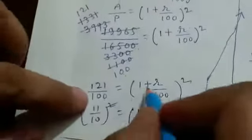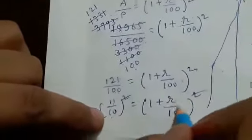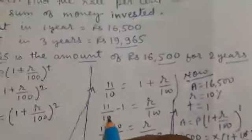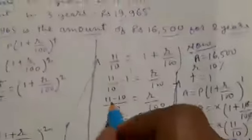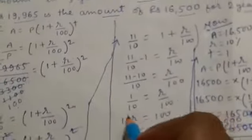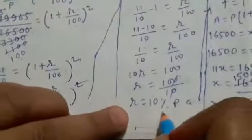Since 121 is the square of 11 and 100 is the square of 10, we have (11/10)^2 = (1 + r/100)^2. Cancelling the powers, 11/10 = 1 + r/100. Transposing 1: r/100 = 11/10 minus 1 = 1/10. By cross multiplication, 10r = 100, so r is equal to 10 percent per annum.